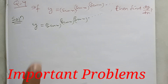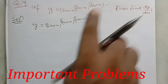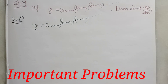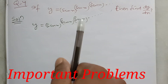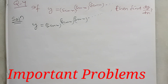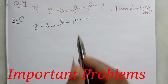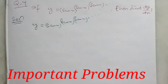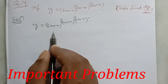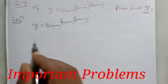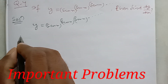Another important example: if y is equal to sine x to the power sine x to the power sine x up to infinite, then find dy by dx. Here the same function is repeated infinite times. I have already said in my theory class it is of the type function to the function to the function. Here sine x is repeated up to infinite number of times. We can solve it using logarithm. Take log on both sides.